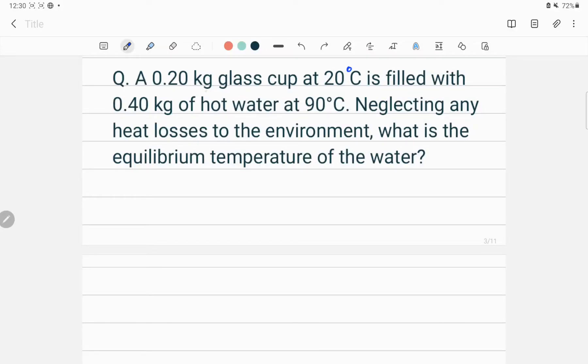A 0.20 kilogram glass cup at 20 degrees Celsius is filled with 0.40 kilogram of hot water at 90 degrees Celsius. So here is a glass and you pour water of 90 degrees Celsius from here which is 0.4 kilogram.